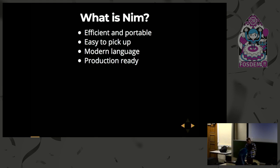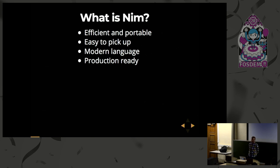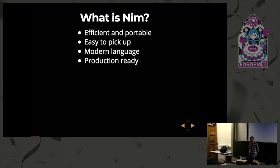It is efficient and portable — it compiles to either C, C++, or even Objective-C and JavaScript. So that allows it to match C's speed and it also gives it access to C's wide range of libraries. It is easy to pick up. NIM focuses on building a small language core with more features implemented using its brilliant macro system, and this makes it easy for anyone to pick up.